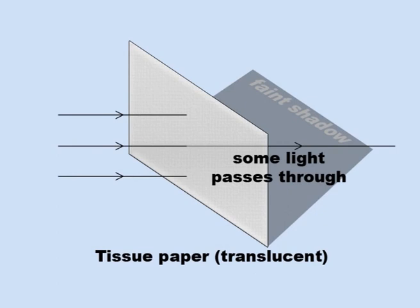Translucent objects, such as paper tissues, allow some light to pass through, so their shadows are not as dark.